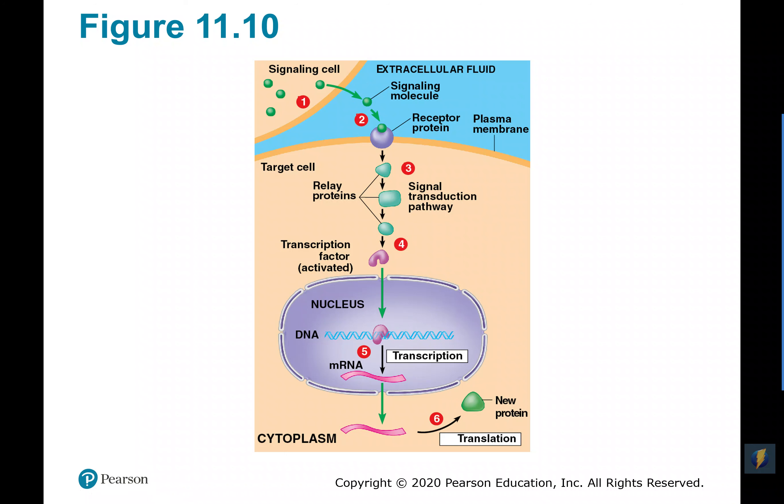This is, for instance, how your thyroid hormone works in the body. Thyroid hormone revs up your metabolism and keeps it high, and this is how it does it — through this signal transduction pathway, turning on new genes within different cells.